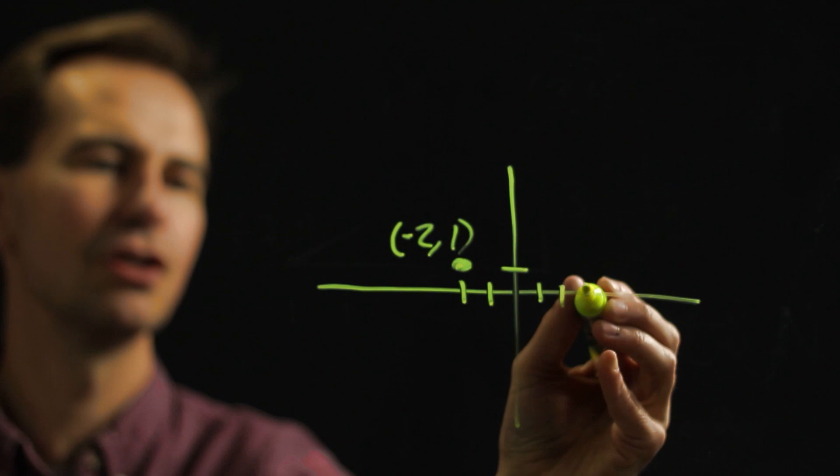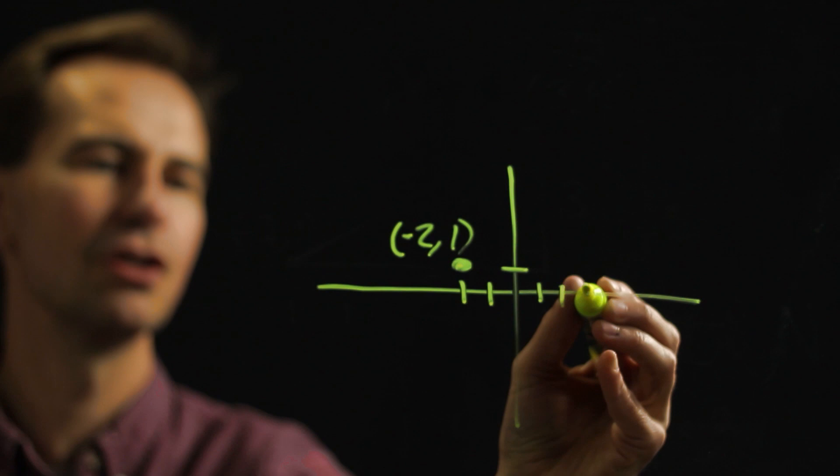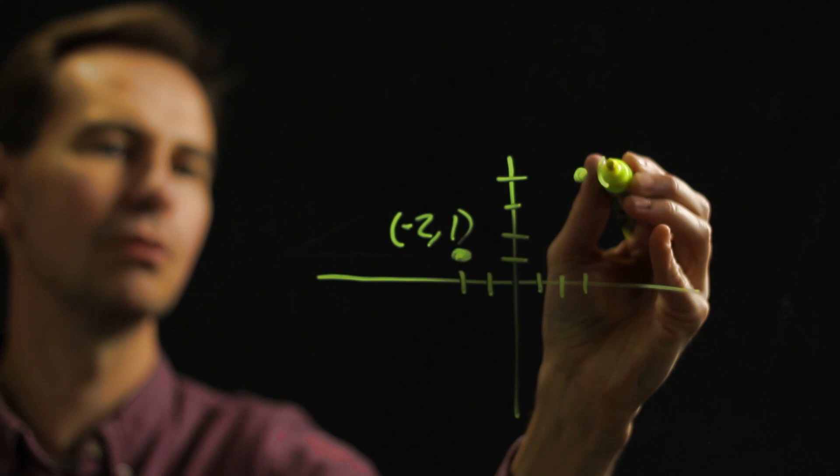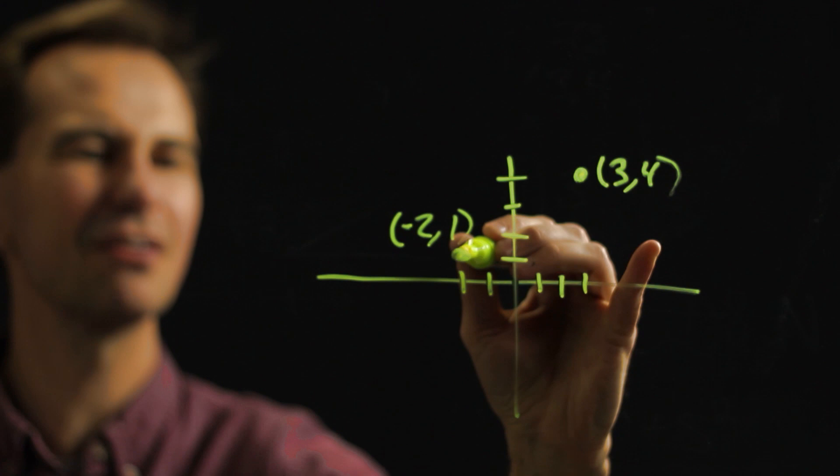And maybe we have another one that's three units to the right and four units up. So three comma four would be that point. What we want to do is figure out how far apart they are in a straight line. So here's how you do that.